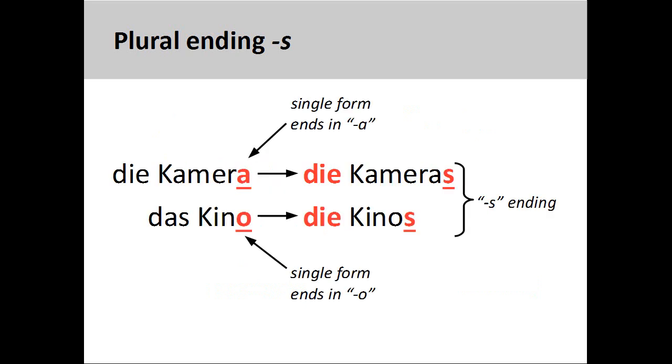The fifth group consists of nouns that, like English, add -s for a plural ending. Most of these nouns, many of which end in -a or -o, are of foreign origin and have been adopted into German. The noun Kamera, camera, is an example: Kameras.